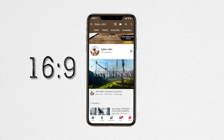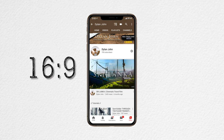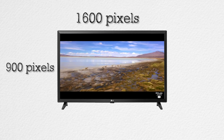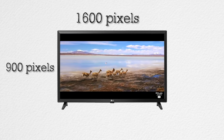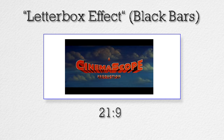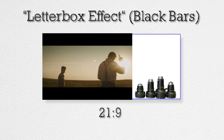Quick run through of aspect ratios without boring you. Most of our phones and TVs display in a 16 by 9 aspect ratio, which is 1600 pixels by 900 pixels. The letterbox effect or black bars occur when a 21 by 9 image — which is the aspect ratio used to show films recorded in CinemaScope and most modern anamorphic formats — is placed on a 16 by 9 format.